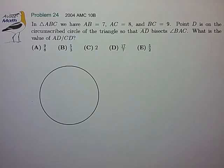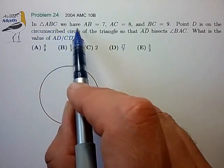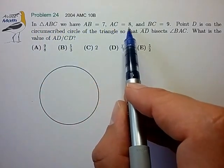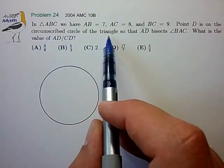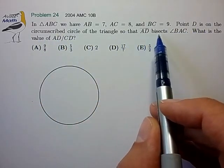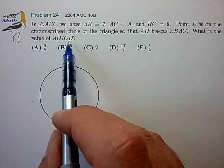Hi, this is a chord example problem from the AMC, so let's see what we have. In triangle ABC, we have length AB of 7, AC of 8, BC of 9. Point D is on the circumscribed circle of the triangle, so that AD bisects angle BAC. What is the value of the ratio AD to CD?